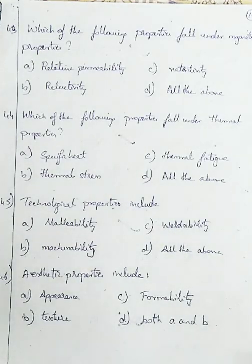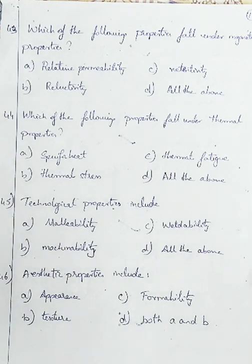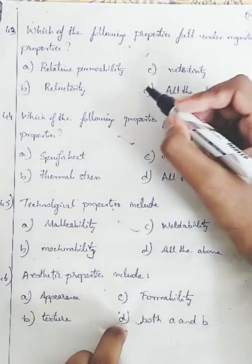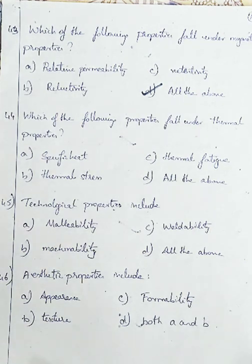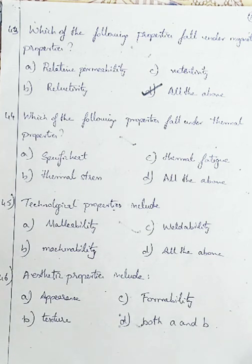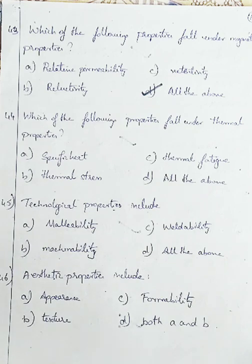Question number 43: which of the following properties falls under magnetic properties? Option A: relative permeability, Option B: reluctivity, Option C: retentivity, Option D: all the above. Relative permeability is the ratio of permeability of magnetic forces in a medium to permeability in vacuum. Reluctivity is the ability of a material to conduct magnetic flux. Retentivity is the ability of a substance to retain or resist magnetization. All three come under magnetic properties — Option D, all the above.